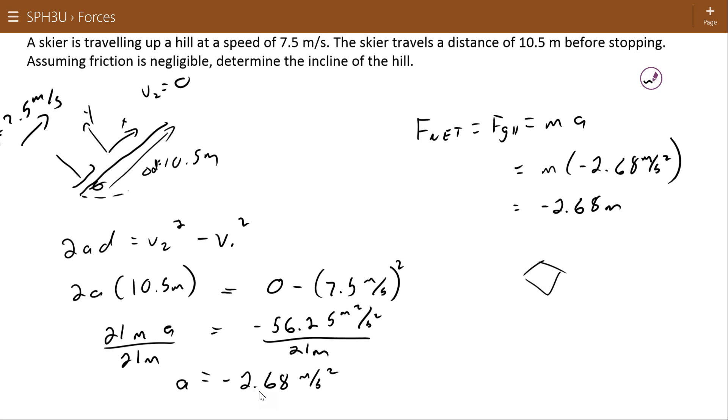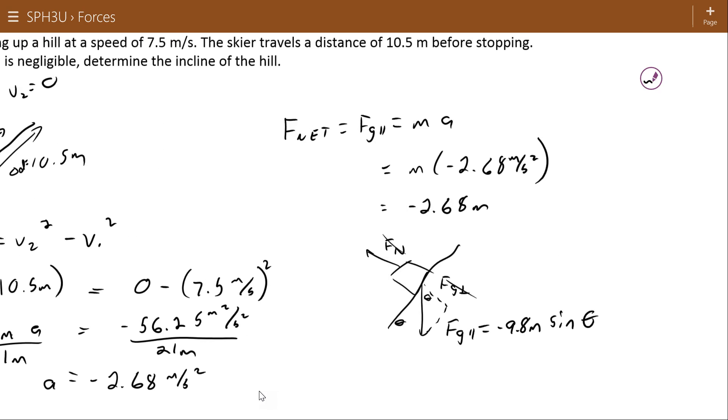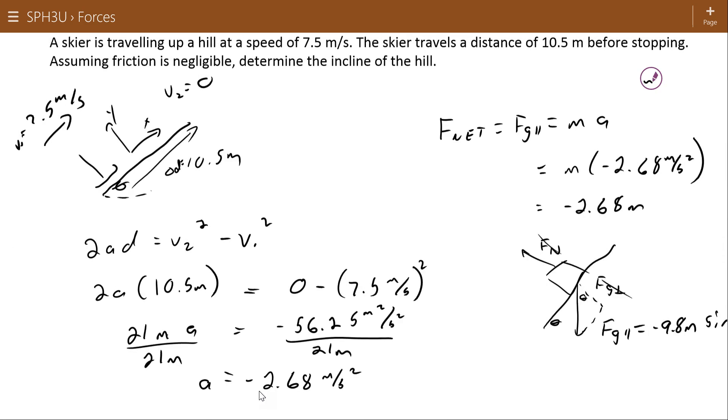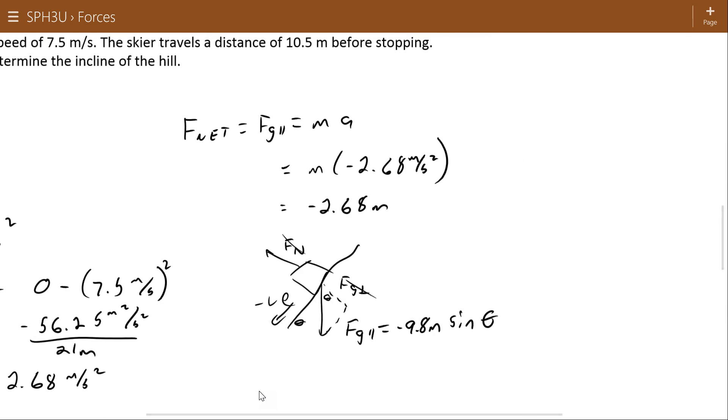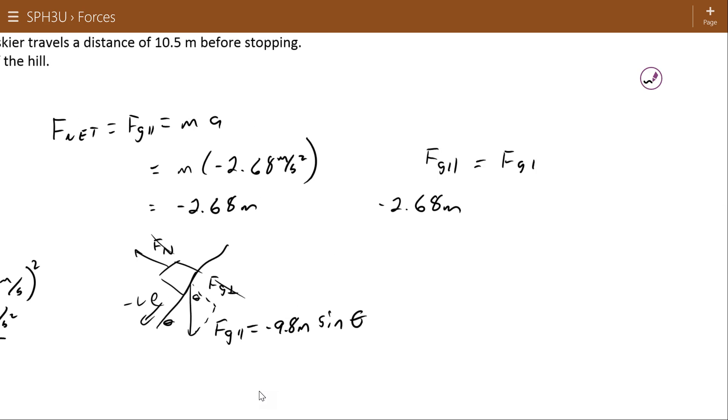Now here's my object sitting on the incline. Here's the incline. I don't know the angle. I've got a force of gravity going down and a normal force. This component and this component cancel each other out. Theta, if this is theta, that's theta. So this fg parallel is equal to negative 9.8 M sine theta. And I'm calling it negative because I called positive this way. So this is negative. So I've got two expressions for fg parallel. One, negative 2.68 M. And the other one is equal to negative 9.8 M sine theta. Since the M's cancel out, the only unknown in that equation is theta. So we can solve for it directly.